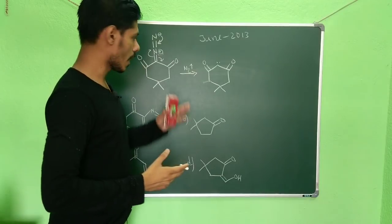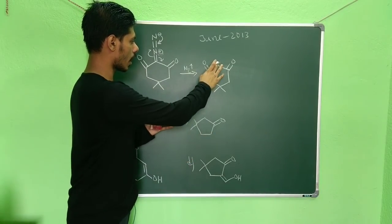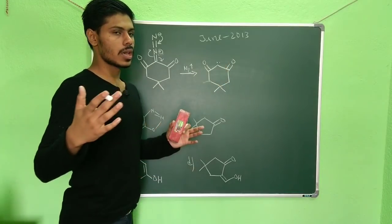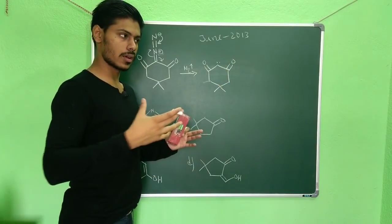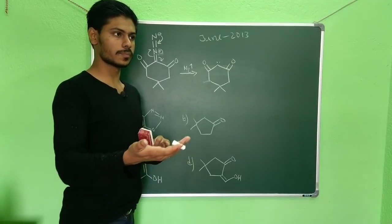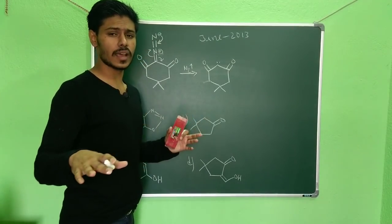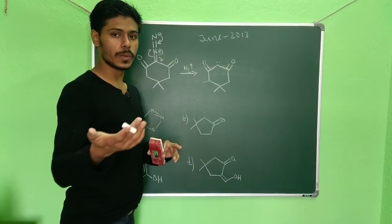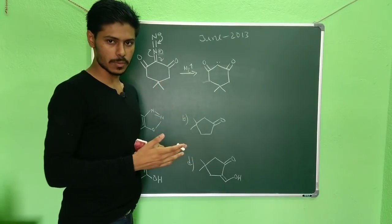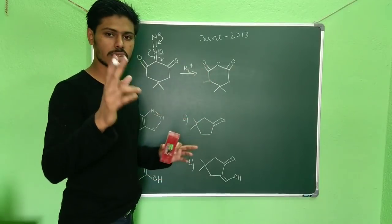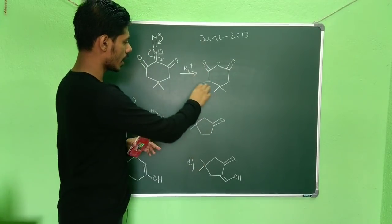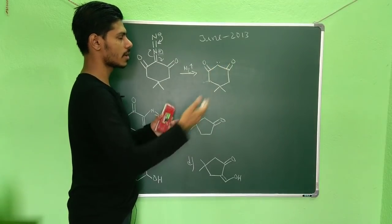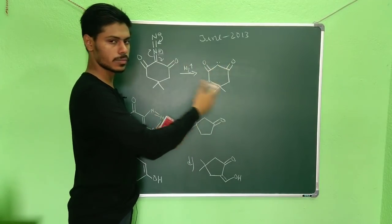Now what will be the fate of this carbene? Whenever you have a carbene adjacent to a carbonyl group, you will have a rearrangement — such as Curtius rearrangement or Wolff rearrangement. These are the same type of rearrangement, and here also the same rearrangement will occur. You can see both sides are symmetric, so the rearrangement can occur on either of these two sides.